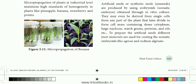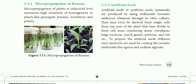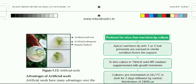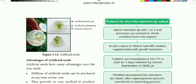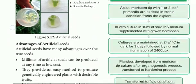Agarose and sodium alginate are the substances added to coat the embryoids. The artificial seed consists of an artificial seed coat, artificial endosperm, and the somatic embryo. This is the form and development of artificial seeds.